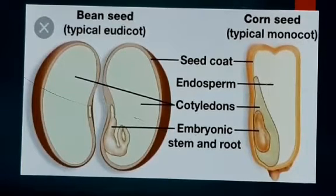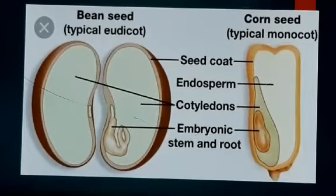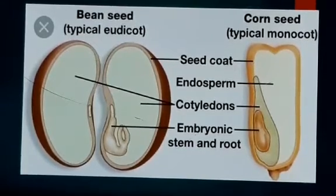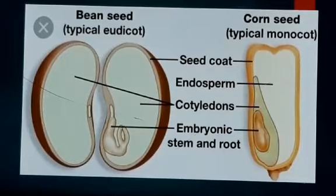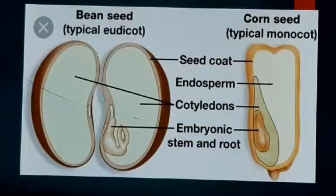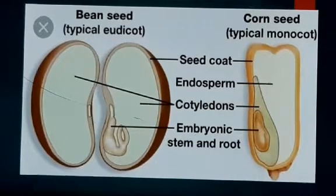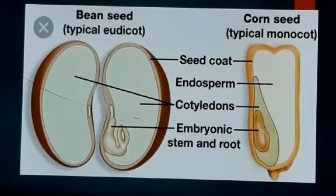Examples of dicot seeds are bean — rajma, chawla, gram seeds, peas — they are all dicot seeds. Have you ever observed your mothers soaking gram seeds, rajma, and chawla overnight? In the morning, when you push the seed between two fingers, it splits or breaks into two parts. Why? Because of the presence of two cotyledons — that is why it is known as a dicot seed.